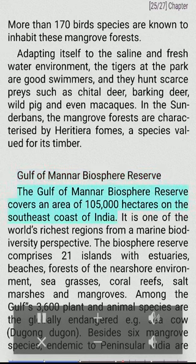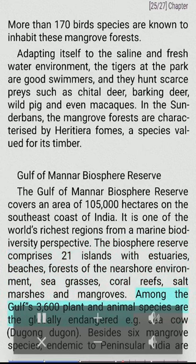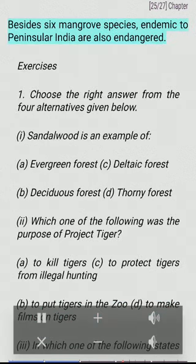Gulf of Mannar Biosphere Reserve: The Gulf of Mannar Biosphere Reserve covers an area of 1,05,000 hectares on the southeast coast of India. It is one of the world's richest regions from a marine biodiversity perspective. The Biosphere Reserve comprises 21 islands with estuaries, beaches, forests of the near-shore environment, sea grasses, coral reefs, salt marshes and mangroves. Among the Gulf's 3,600 plant and animal species are the globally endangered Sea Cow (Dugong dugon). Besides, six mangrove species endemic to peninsular India are also endangered.